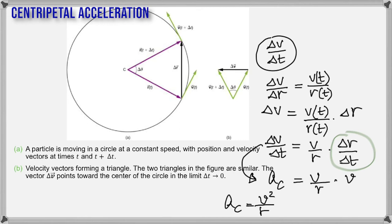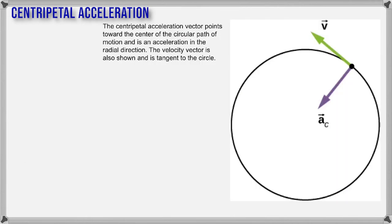The centripetal acceleration vector points toward the center of the circular path — it's an acceleration in the radial direction. Sometimes it's called the radial acceleration because it's along the radius towards the center.